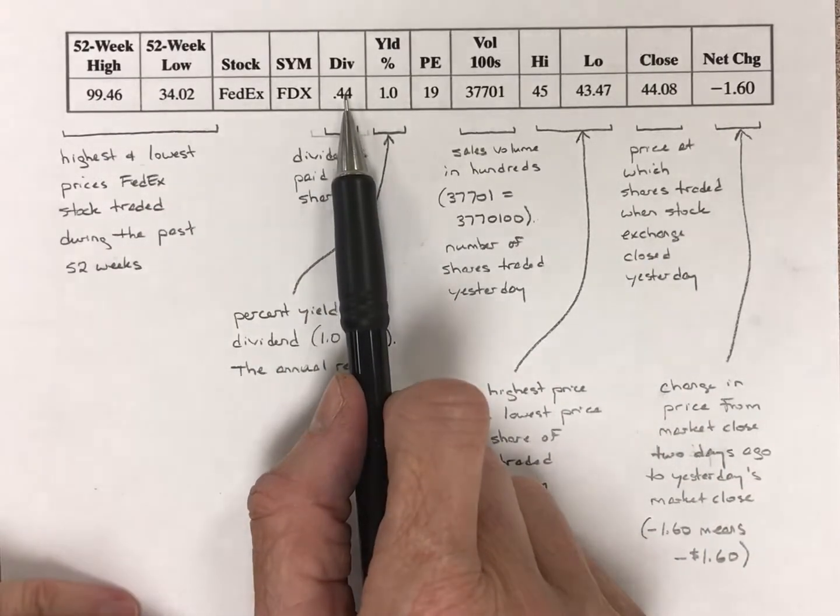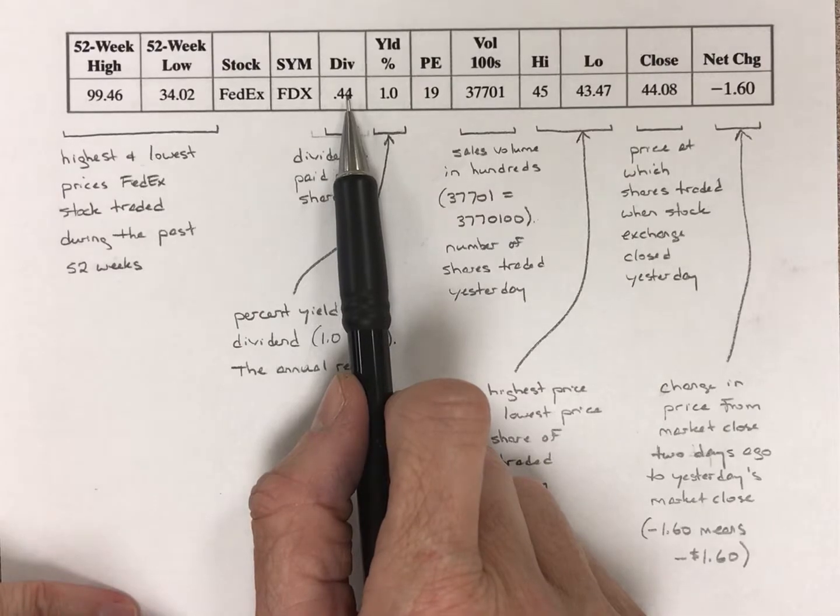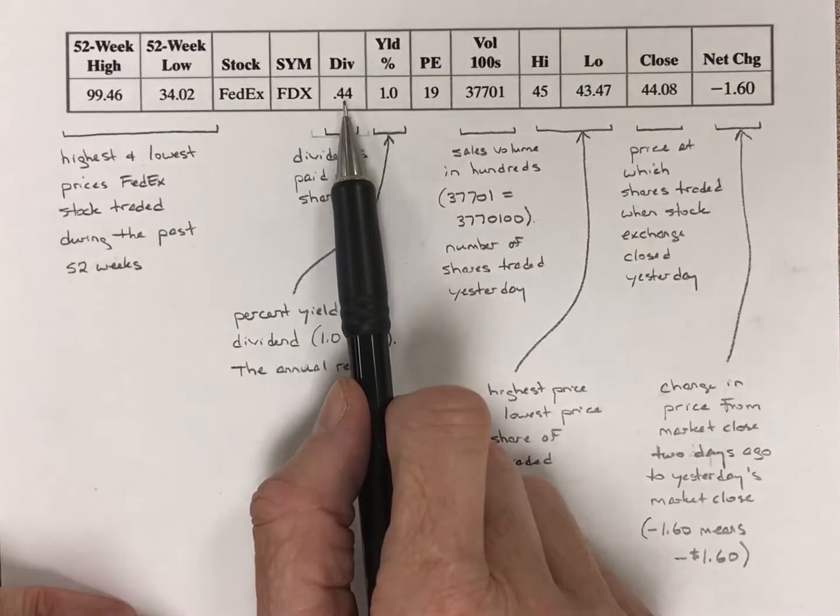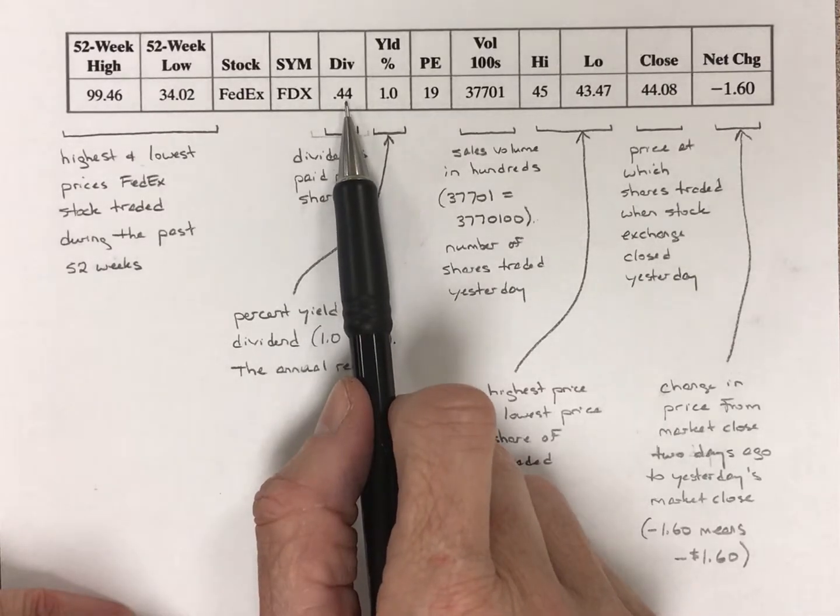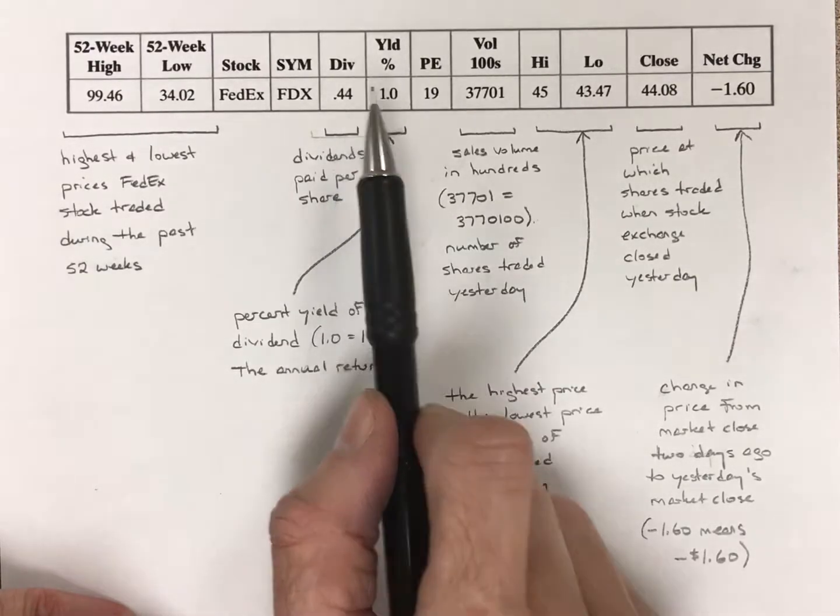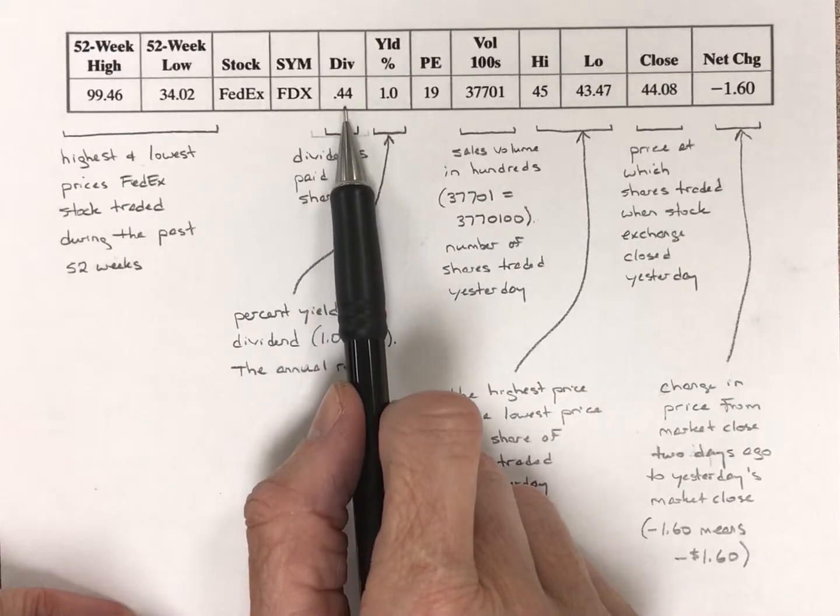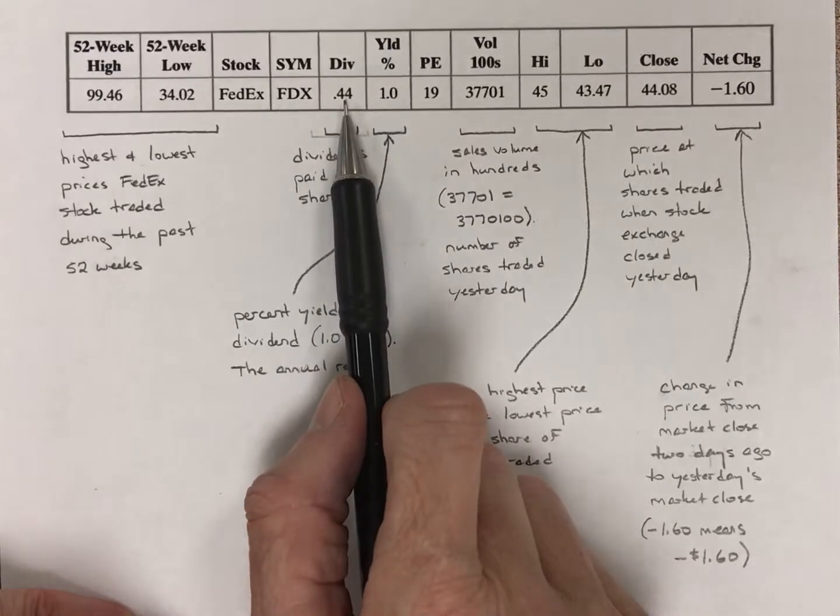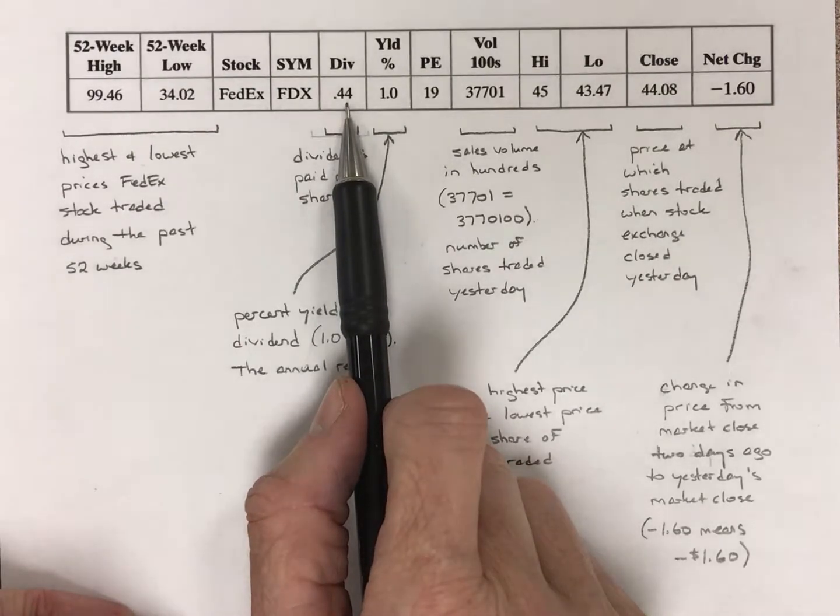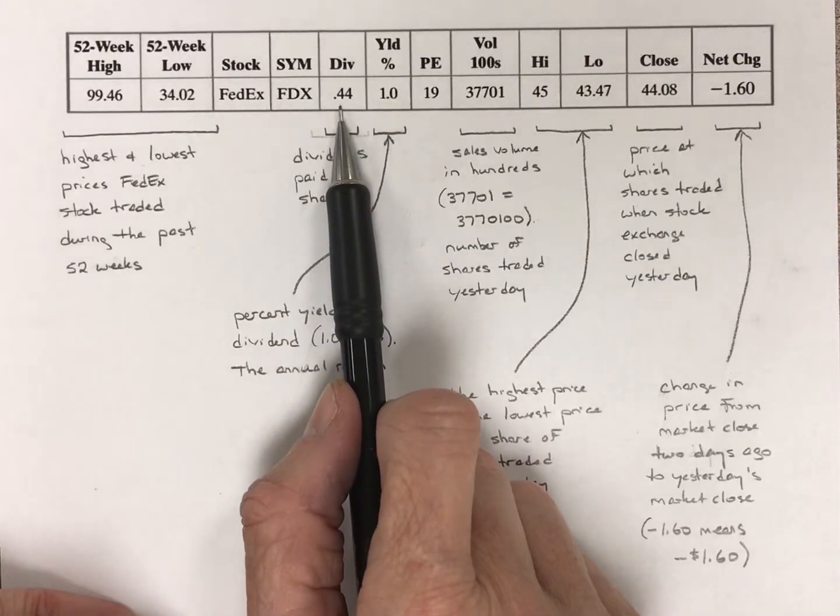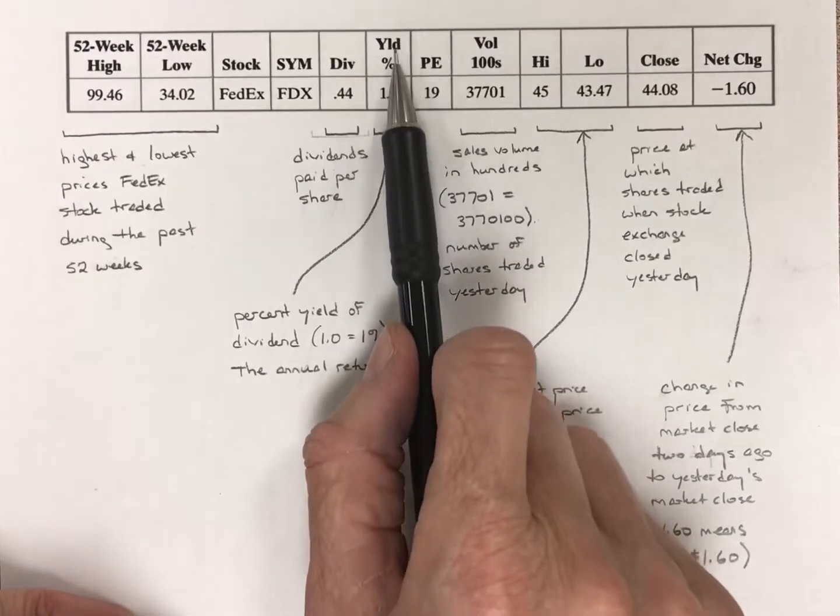Okay, the dividend. This is what I talk about is profits, okay? If they've chosen to pay out some of their profits, they'll do that in a dividend, it's the price they pay per share. And in this case, it's written in dollars and cents. So they are paying out a dividend of $0.44 per share. So if you own 10 shares, well, 10 times $0.44, you will get a check for $4.40. That's your dividend.